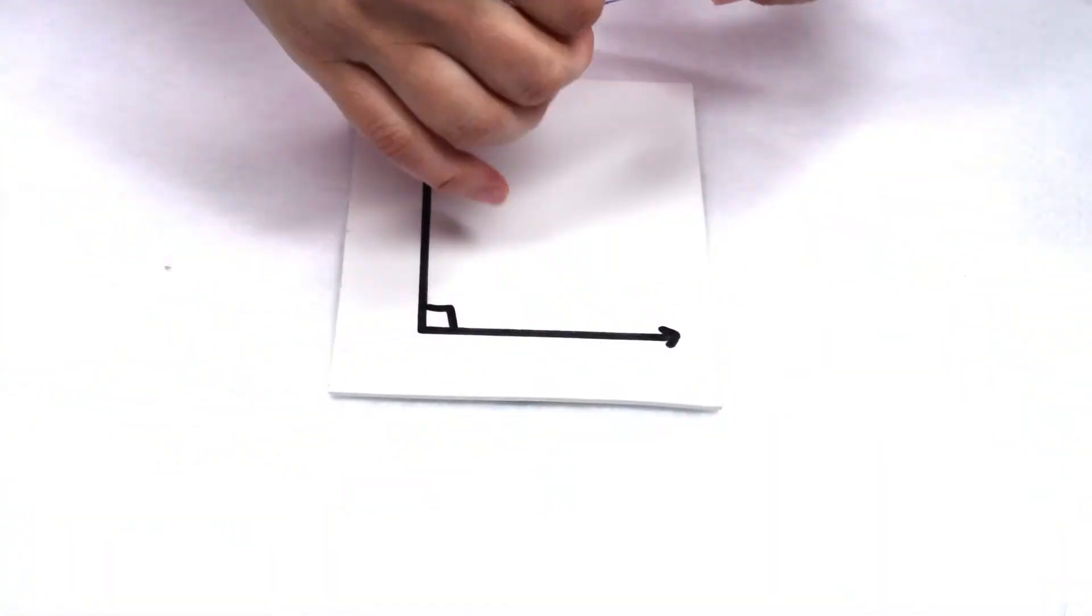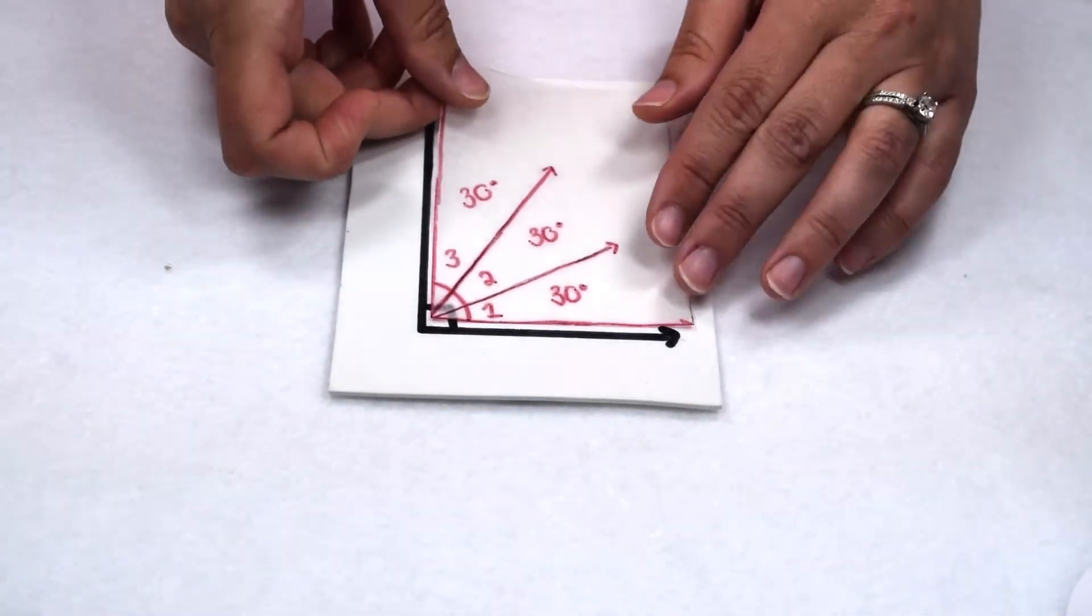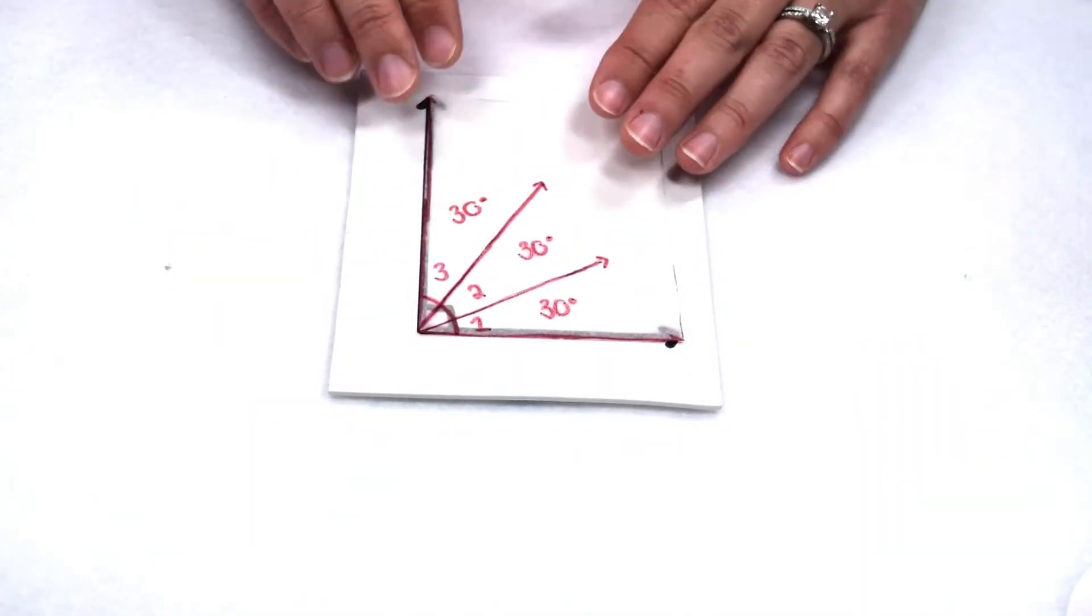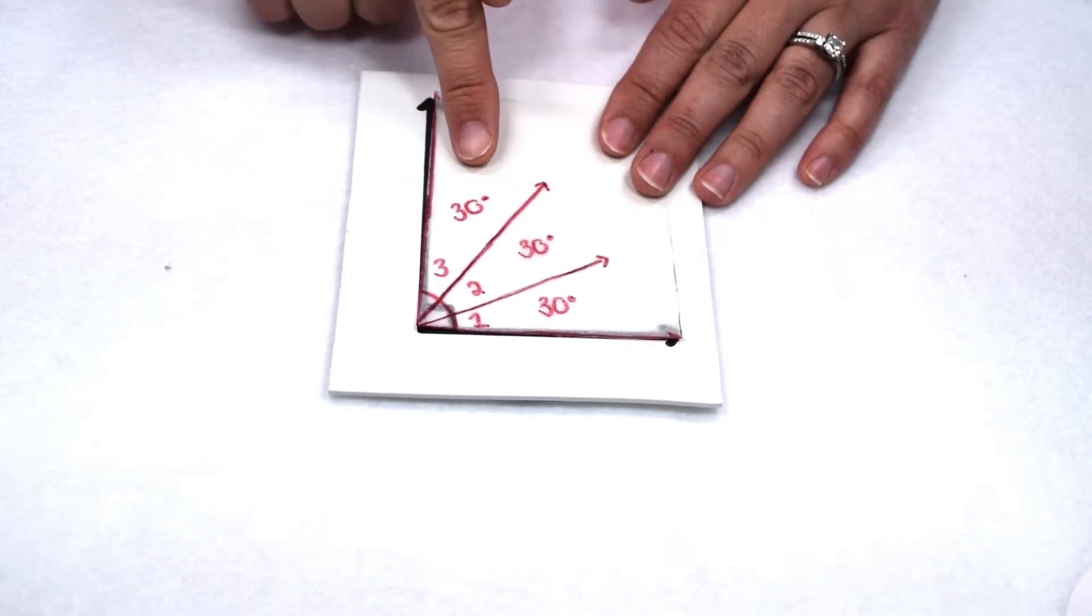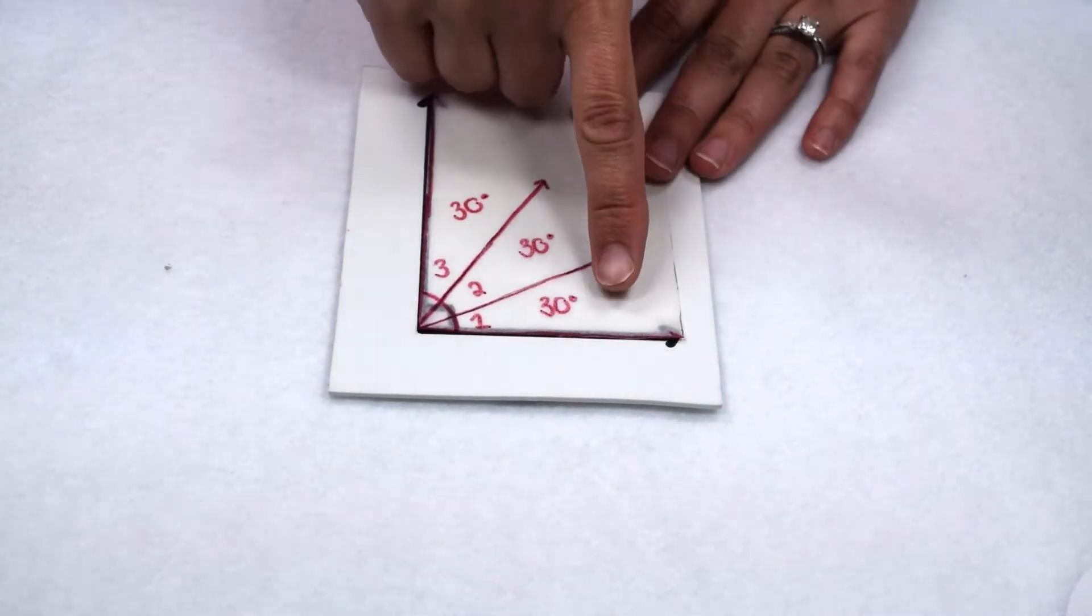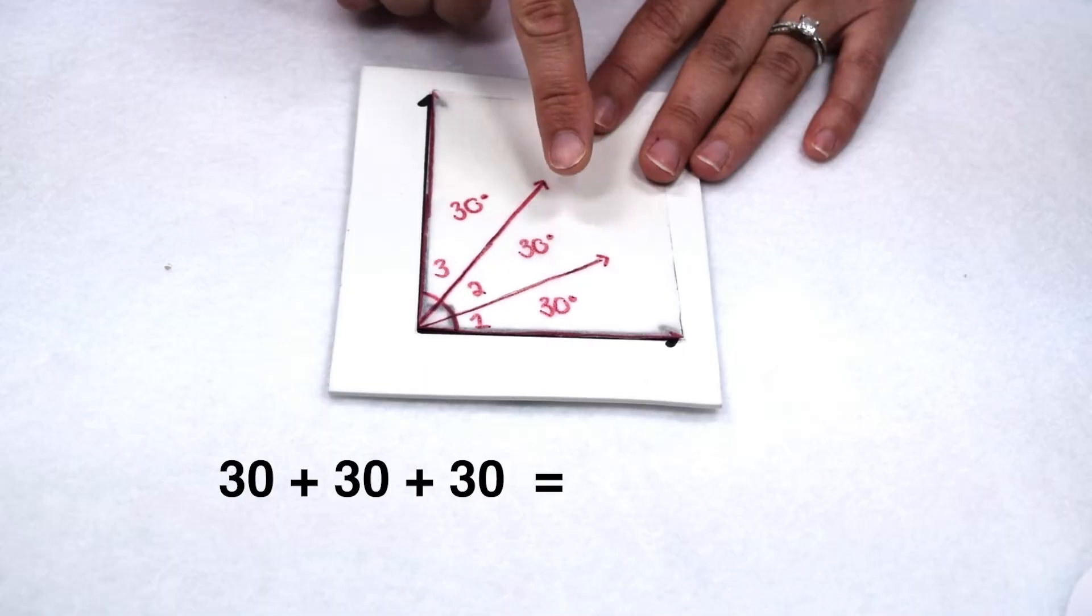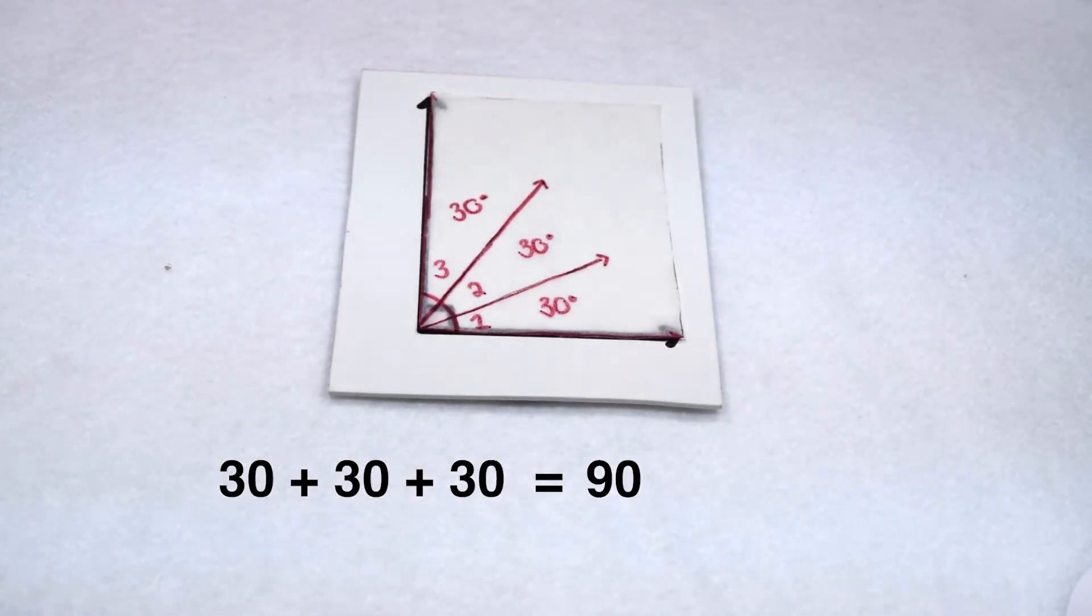What if we take our right angle though, and instead we break it down into three acute angles? 30, 30, and 30 for example. Well 30 plus 30 gives me 60, 60 plus 30 gives me 90. So would these three angles be considered complementary angles?